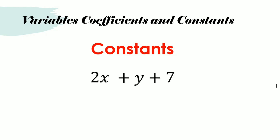Here's another example. If we had 2X plus Y plus 7, the only term here that is independent of any variable is the number 7. So, 7 would be the constant.